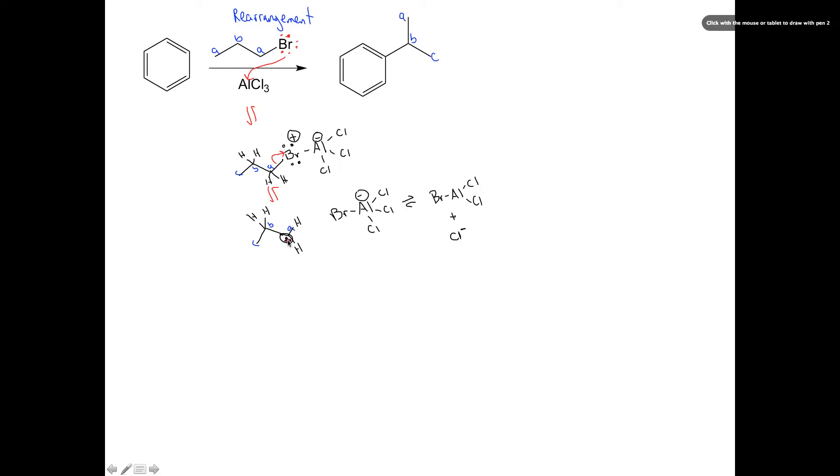That is an unstable species. So what can happen is this carbon-hydrogen bond can break. We can undergo a rearrangement here. And that's really the key step to this reaction.